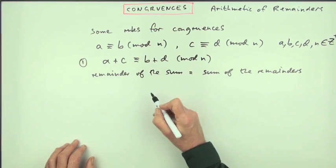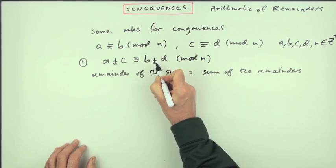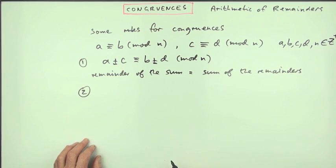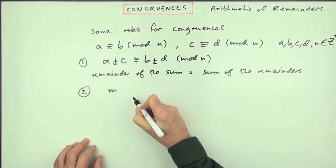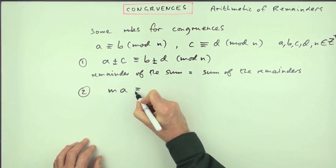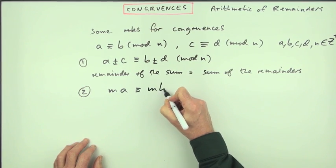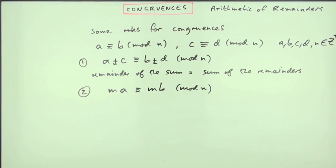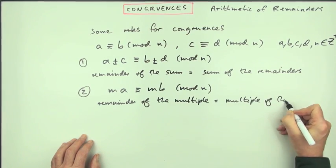Addition and subtraction works as well. Any multiple of A is congruent to the same multiple of B. The remainder of the multiple equals the multiple of the remainder.